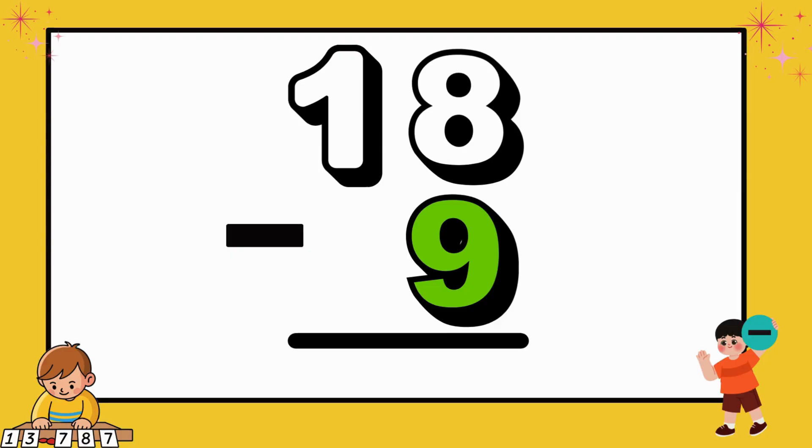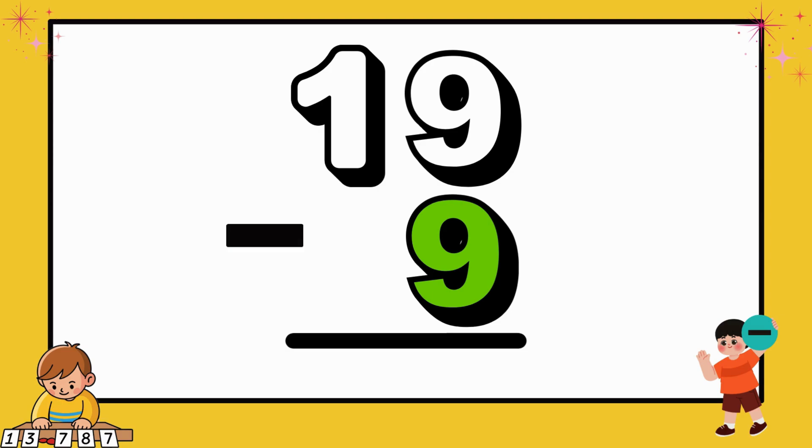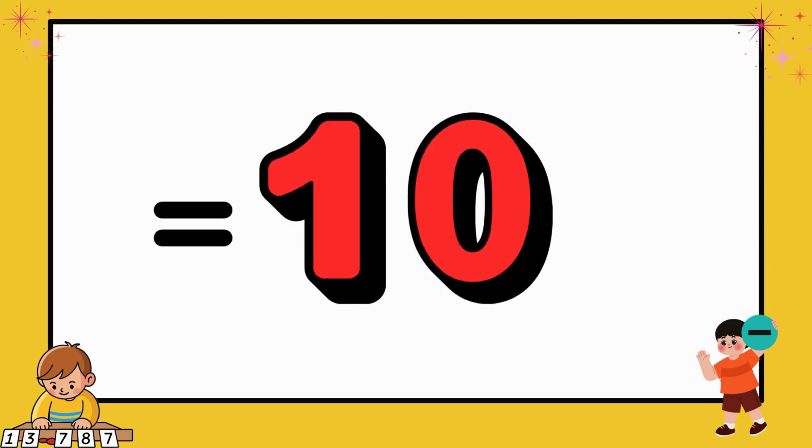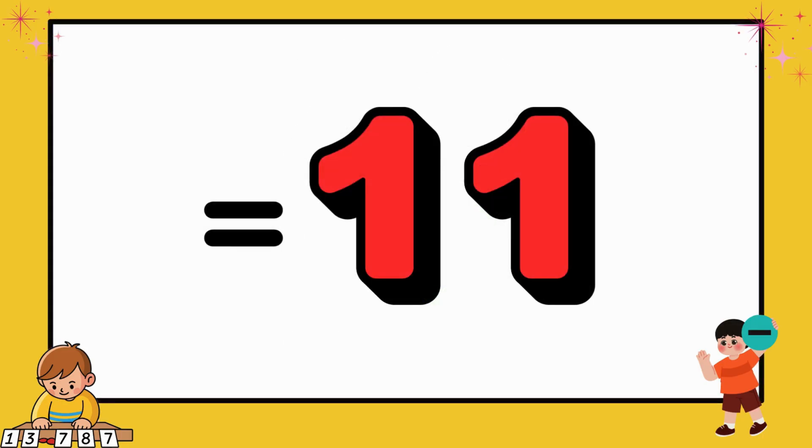Also, 18 minus 9 equals 9. Then, we have 19 minus 9 equals 10. Finally, 20 minus 9 equals 11.